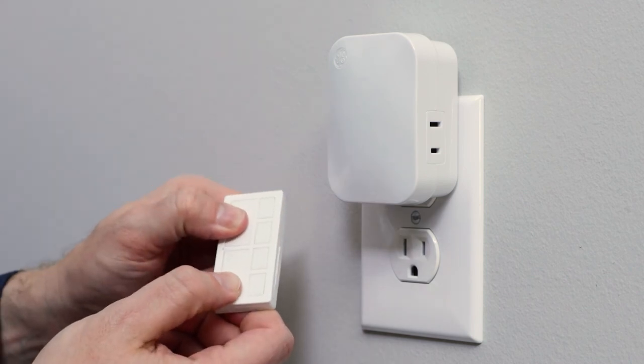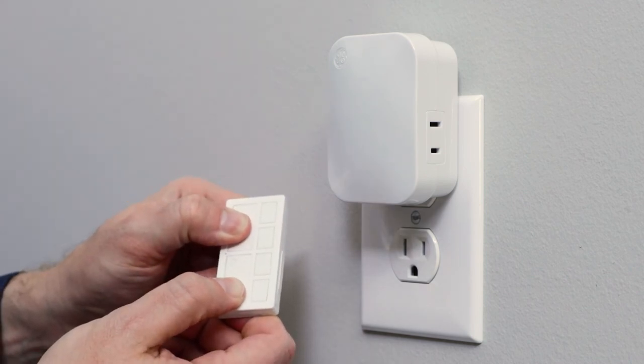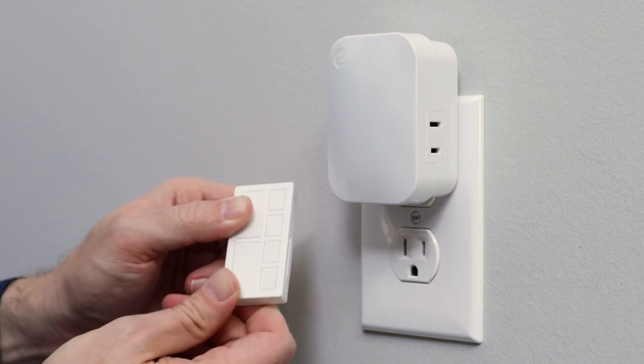To remove all paired devices from the receiver, press the ON and OFF buttons at the same time for 5 seconds.